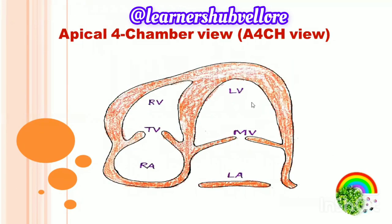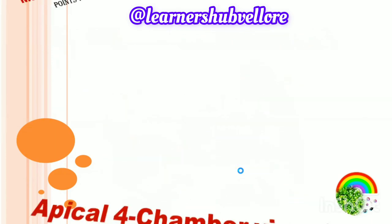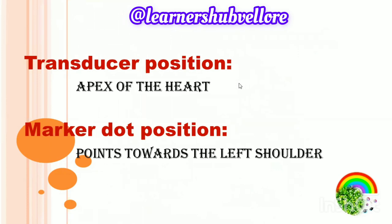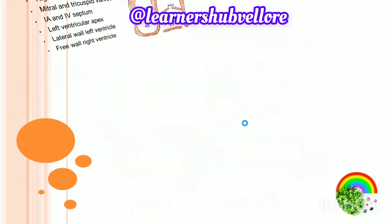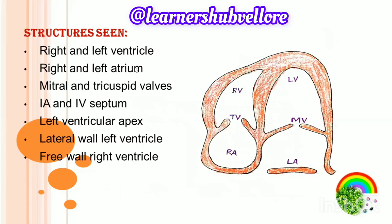Coming to the apical four chamber view. Here we can see the right ventricle, tricuspid valve, right atrium, left ventricle, mitral valve, and left atrium. The transducer position is at the apex of the heart, and the marker dot points towards the left shoulder.